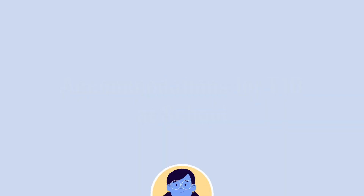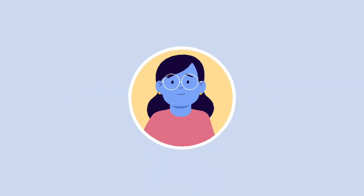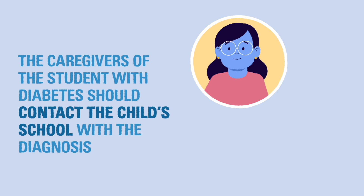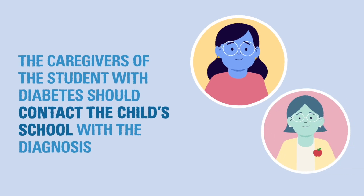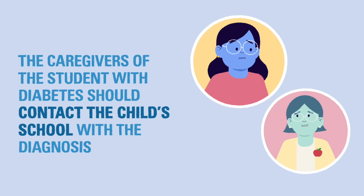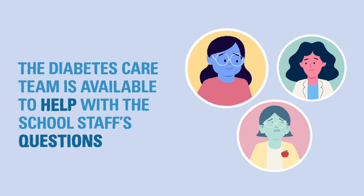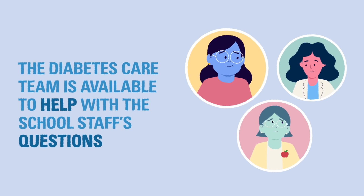After a diabetes diagnosis, the parents or caregivers of the child with diabetes should contact the child's school to inform the school staff of the diagnosis. The diabetes care team is available to help with any questions the school staff might have about their responsibilities related to taking care of the child's diabetes.